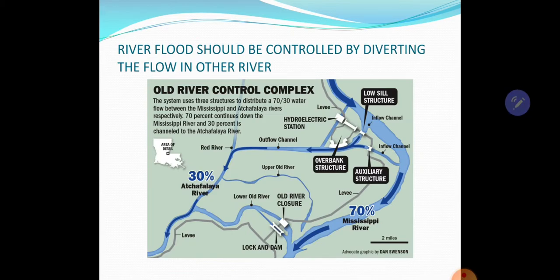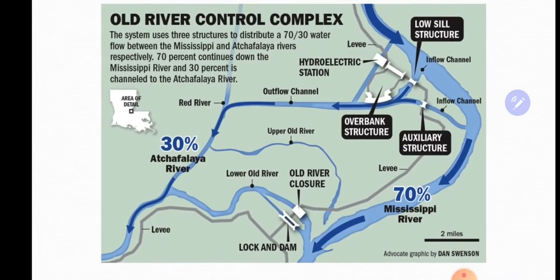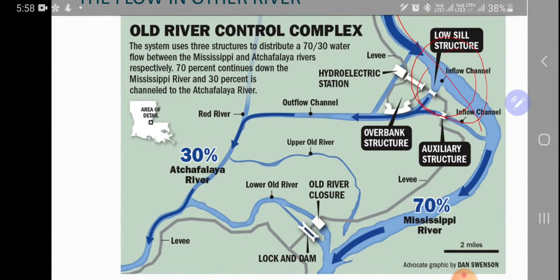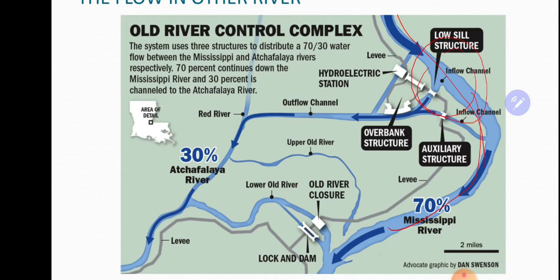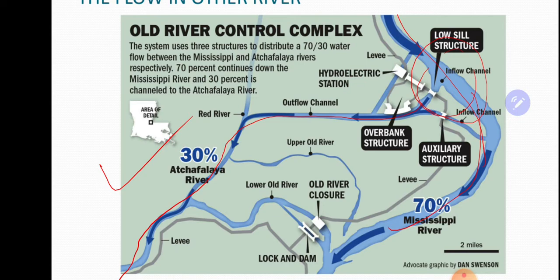Now, rivers or river floods should be controlled by diverting the flow into other rivers. You can see one image — this is the Mississippi River. You can see the major flow. Now 70% of the flow remains there, but they have one diversion where 30% of the water goes into a smaller bifurcation, and we can avoid flooding. When we avoid flooding of the river, we avoid the erosion of the soil also. Region to region, river to river, there are many aspects we have to study and plan to avoid erosion.